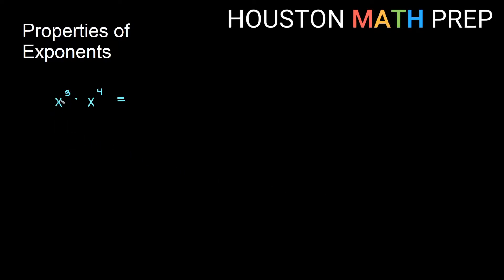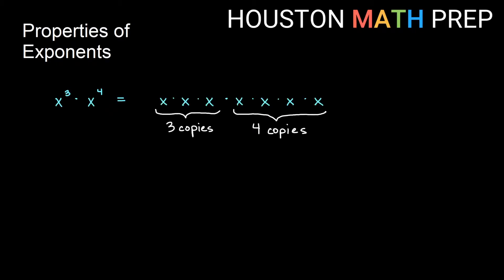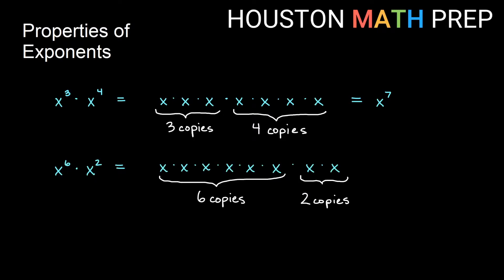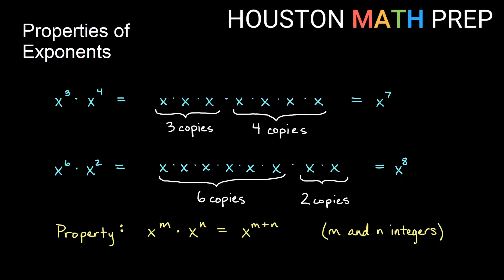Our first property: if you have a base to some power times the same base to another power, you add the exponents. For example, x to the third times x to the fourth — since x cubed is three copies of x and x to the fourth is four copies, we have seven copies total, giving x to the seventh. Similarly, x to the sixth times x squared gives eight copies, so x to the eighth. The property is: same base multiplying means add the exponents.